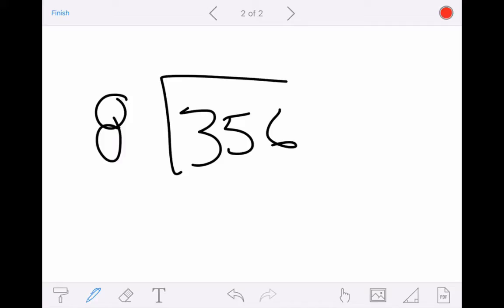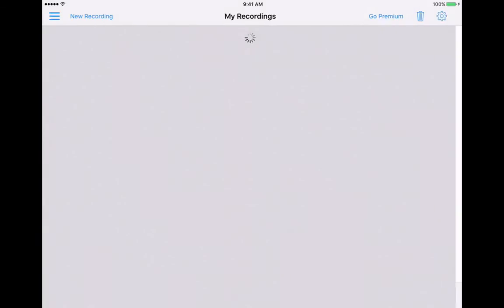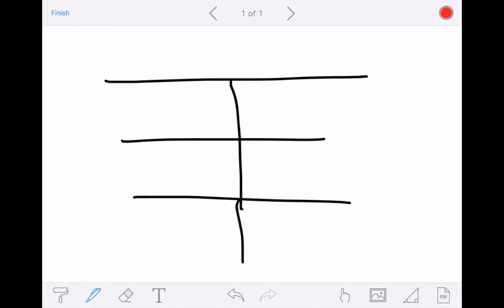To show you how this works, I'm going to tap Finish in the upper left corner, and I'll tap Continue. I'm going to start over, so I'm going to tap New Recording in the upper left corner. Let's say I want to teach my students how to conjugate AR verbs in Spanish, in the present tense.